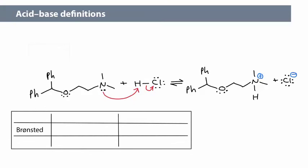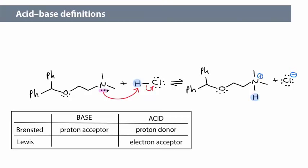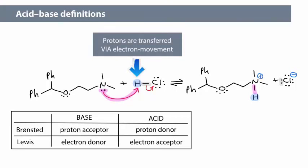In the Brønsted acid-base definition, the acid is the proton donor and the base is the proton acceptor. In the Lewis definition, the acid is the electron acceptor and the base is the electron donor. Both definitions identify the same species as the acid and as the base, with the Brønsted definition being narrower — only reactions that involve a proton transfer can have acids and bases according to that definition. In this module, we focus on acid-base reactions that involve proton transfers, the Brønsted definition, but electron movement is still key to how these reactions work. That means the Lewis acid-base definition is applicable to all the reactions in this module.